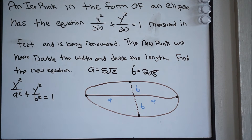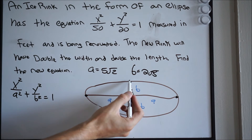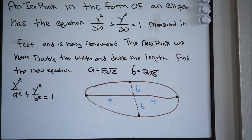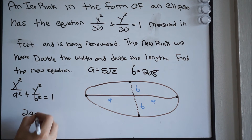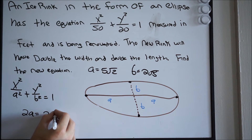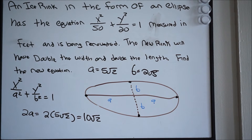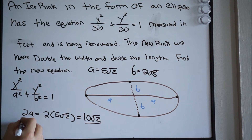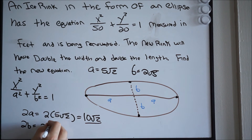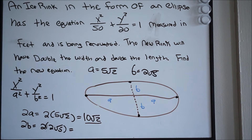The width of the ellipse is 2 times a, and the length is 2 times b. So the width is 2 times 5 square root of 2, which equals 10 square root of 2. The length is 2 times 2 square root of 5, which equals 4 square root of 5. So the original width is 10 square root of 2 and the original length is 4 square root of 5.